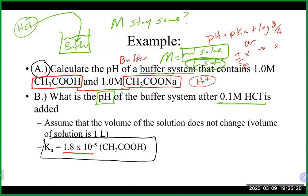When you add any type of solution to another — like acid to a buffer, base to a buffer, or during a titration where you're constantly adding volume — the molarity changes because the volume changes. That's why it's really important to do ICE tables in moles when adding volume, because moles do not change. After the first ICE table in moles, convert back to molarity — nine times out of ten you'll need molarity for the next calculation.